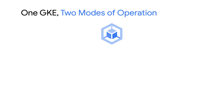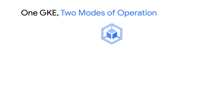There are two modes of operation in GKE. Each is designed to allow users different levels of involvement with Kubernetes itself. Both Autopilot mode and Standard mode GKE clusters take some of the management overhead of Kubernetes clusters off your hands.